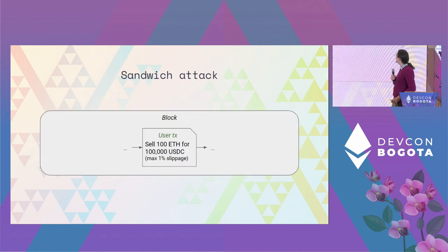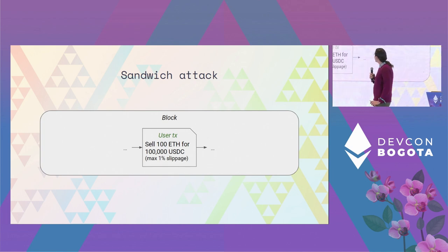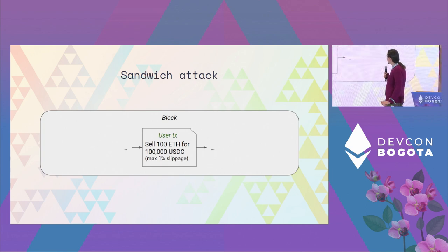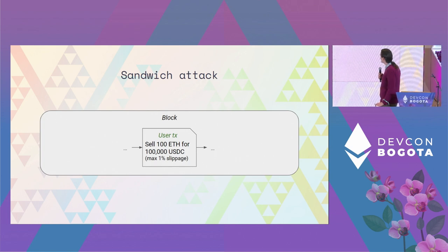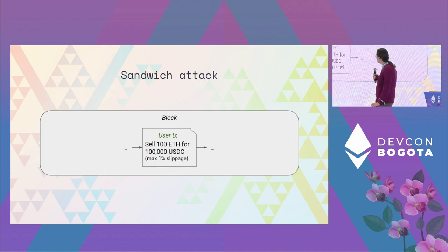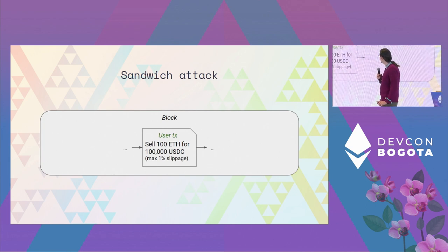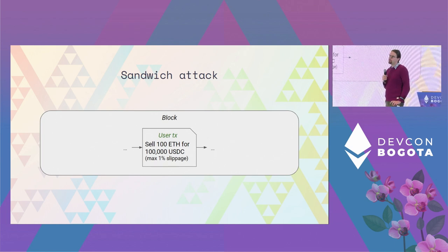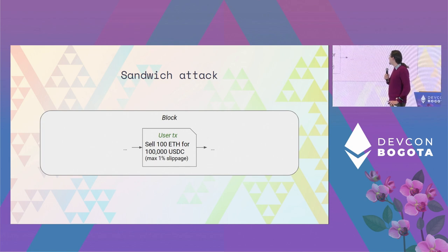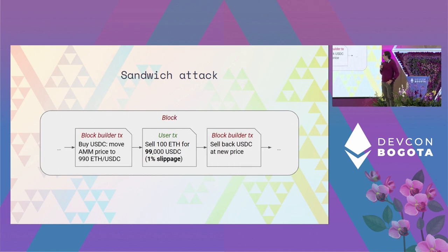One very common attack is called the sandwich attack, in which a user transaction is exploited to extract MEV. Let's say that a user is creating a transaction, once included in a block, to sell on an automated market maker 100 ETH for 100,000 USDC. As is usually customary, there is extra slippage added in case the price moves between when the transaction is created and executed. Normally it shouldn't really matter — the user should take the expected price. However, the point of sandwiching is actually using the slippage against the user.